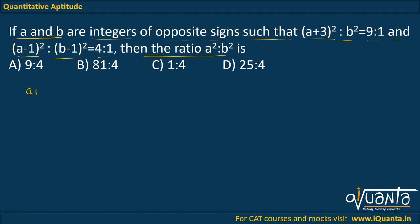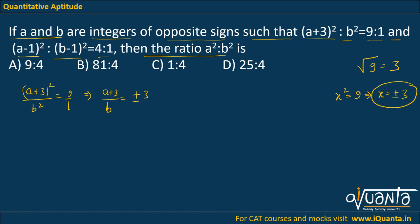We have been given that (a+3)²/b² = 9:1, which ultimately means (a+3)/b = ±3, because when we have a variable on the LHS we take both signs. For example, if you are asked to find the value of √9, you write only 3. But if x² = 9, then x = ±3. The same case applies here, so we consider both cases, giving us two equations.